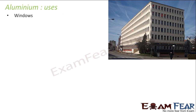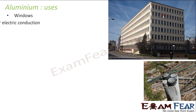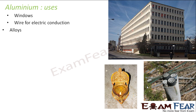Let's talk about the uses of Aluminium. It is used to make windows — you must have seen in buildings, all these window panes are made of Aluminium. It is used for electrical conduction. It is also used to create alloys.